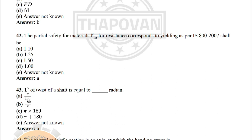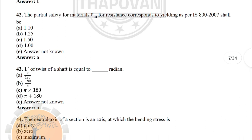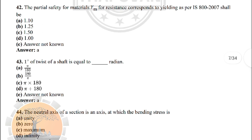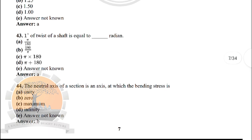Next: the partial safety factor for materials for resistance corresponding to yielding as per IS 800:2007 shall be — the correct answer is option A: 1.10. Next: one degree of twist of the shaft is equal to — the correct answer is: π/180 radians.